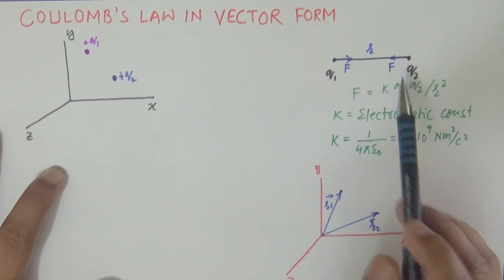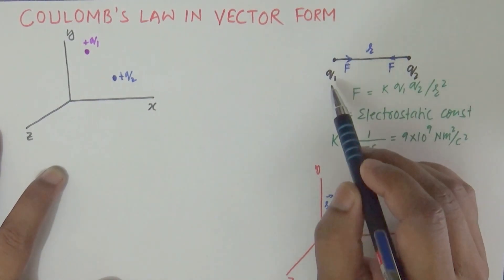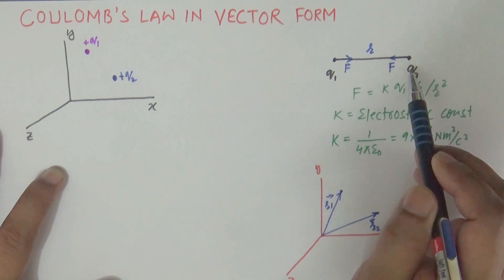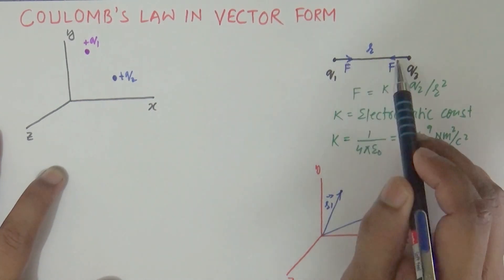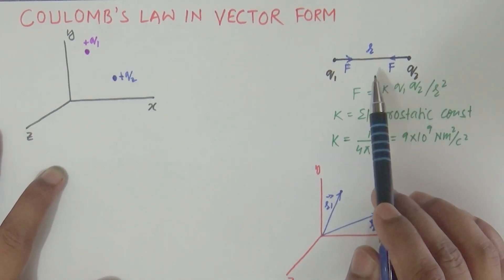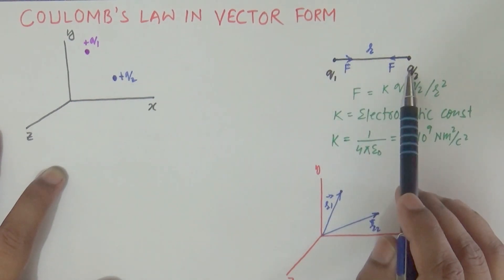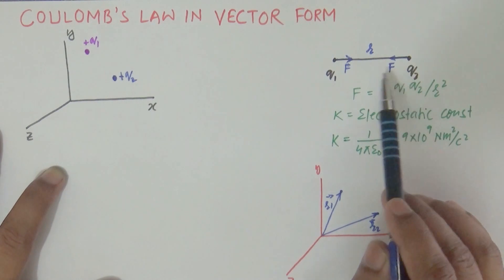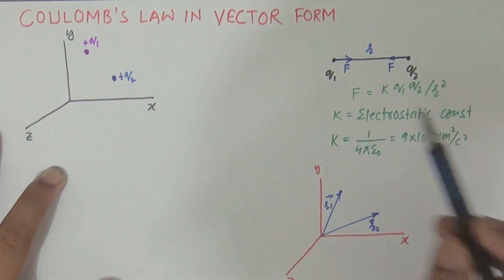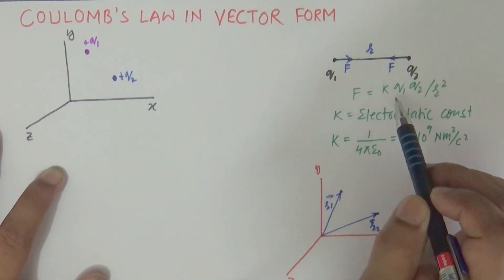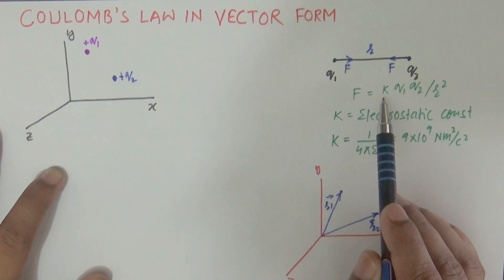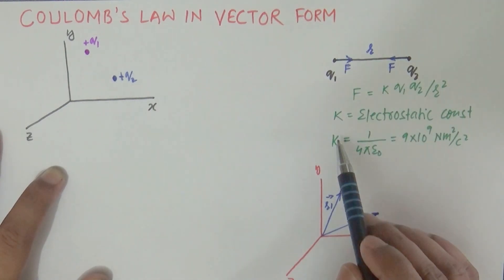If both charges are of opposite nature, the force is attractive. For example, suppose q1 and q2 are oppositely charged — one positive and one negative — they attract each other with equal force. It doesn't matter whether they are equal or not; if q1 is one coulomb and q2 is a million coulombs, the force of attraction on both will be the same. The magnitude of force is given by k·q1·q2 divided by r squared, where k is called the electrostatic constant.